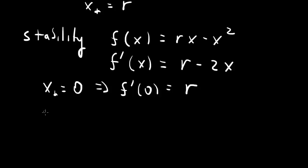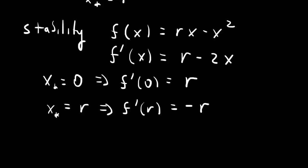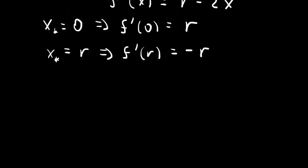At the second fixed point, x-star equals r, the derivative is r minus 2r, which equals minus r. When f-prime is negative, the fixed point is stable. When f-prime is positive, the fixed point is unstable.